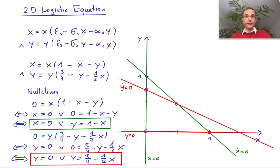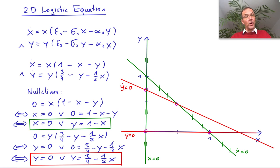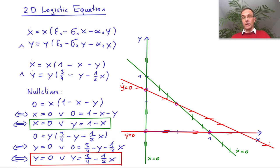So what do the nullclines tell us? Well, the green nullclines — the x nullclines — tell us that there is no movement in the x direction, so we know the dynamics is vertical. Since there is no component in the x direction, the dynamics goes vertical. The same is true along the other nullcline. For the y nullclines, there is no movement in the y direction, so the dynamics goes horizontal. At the pink points, there is no movement. At the red nullclines, there is only horizontal movement. At the green nullclines, there is only vertical movement.